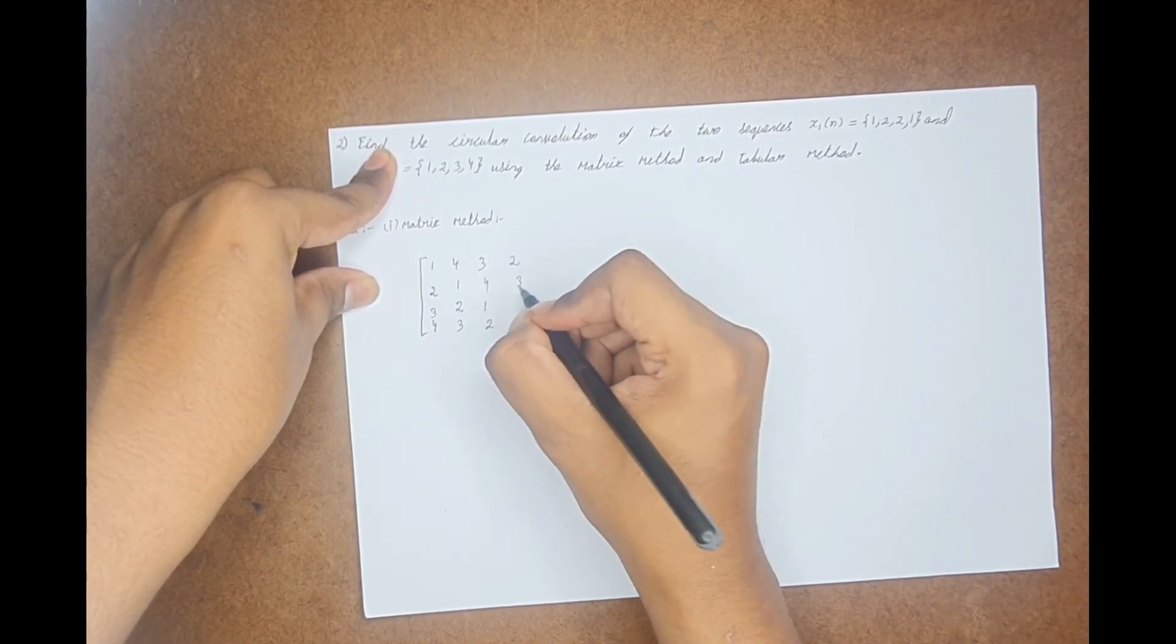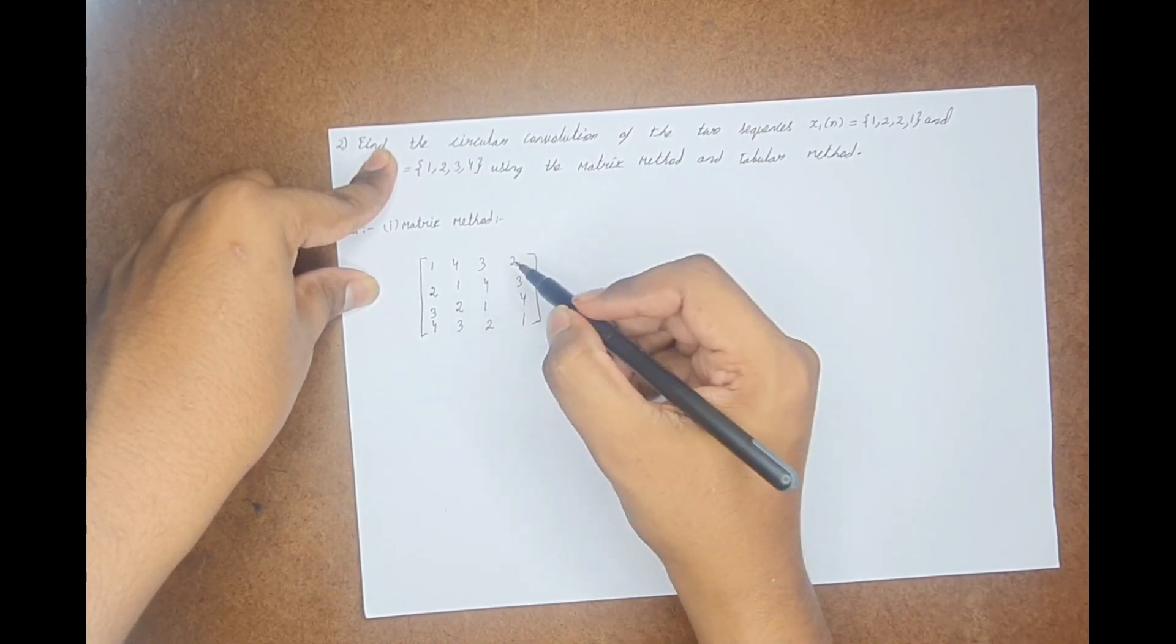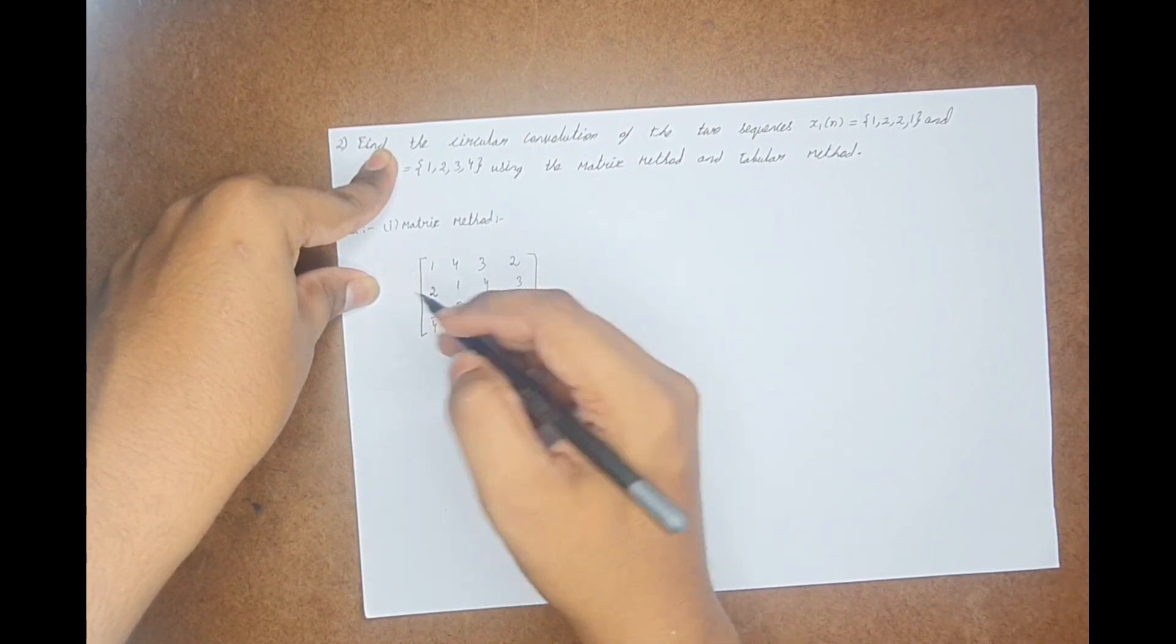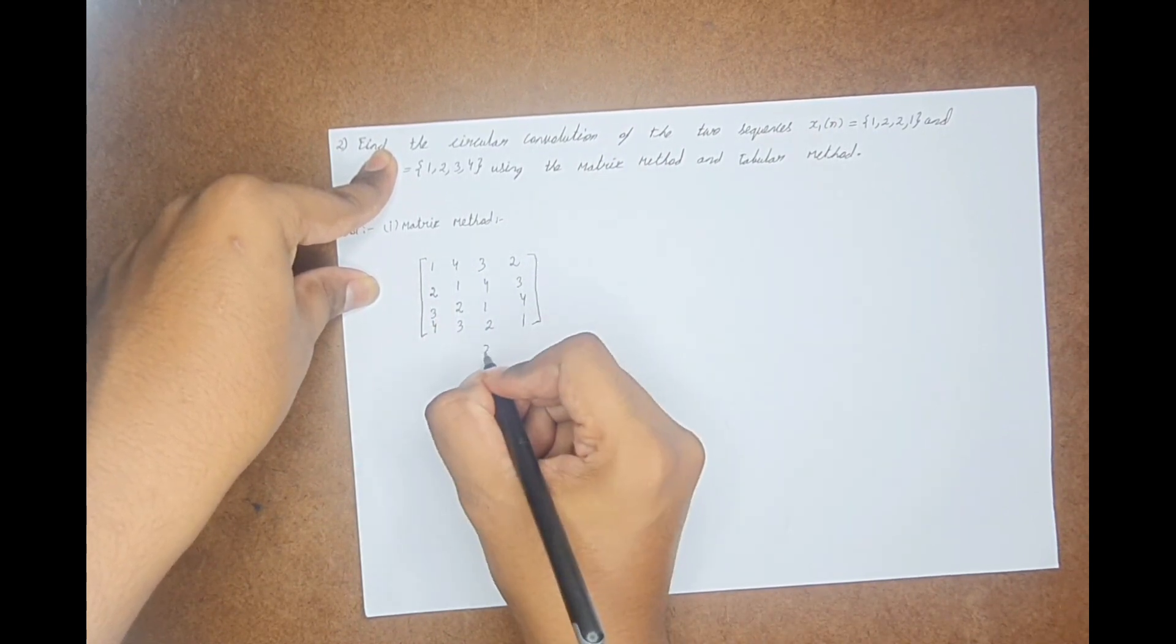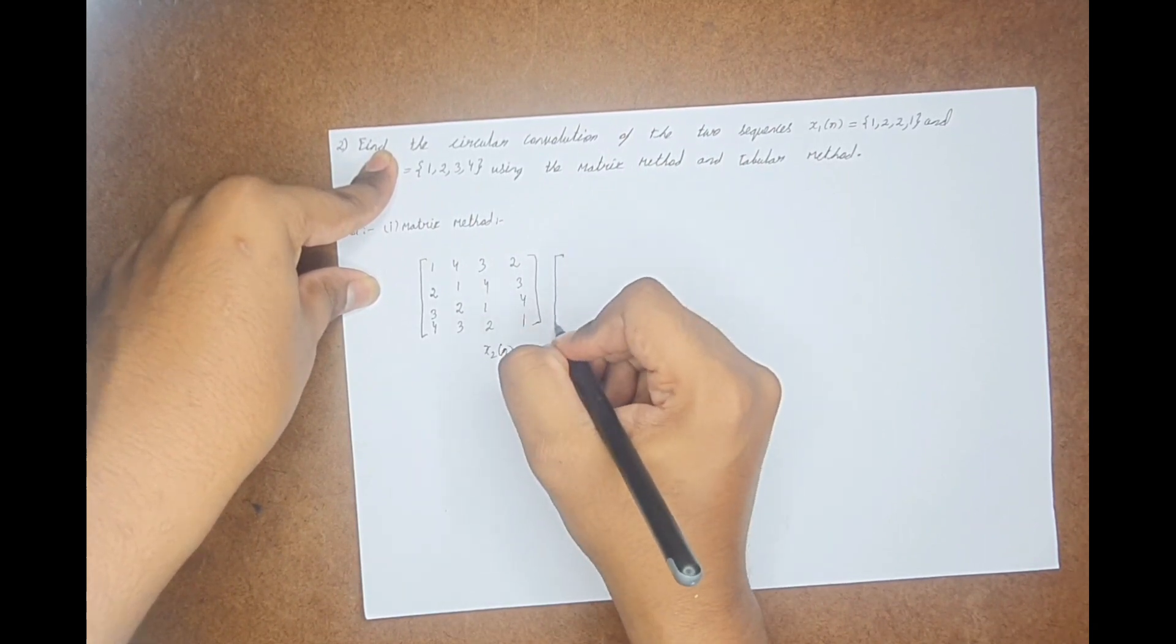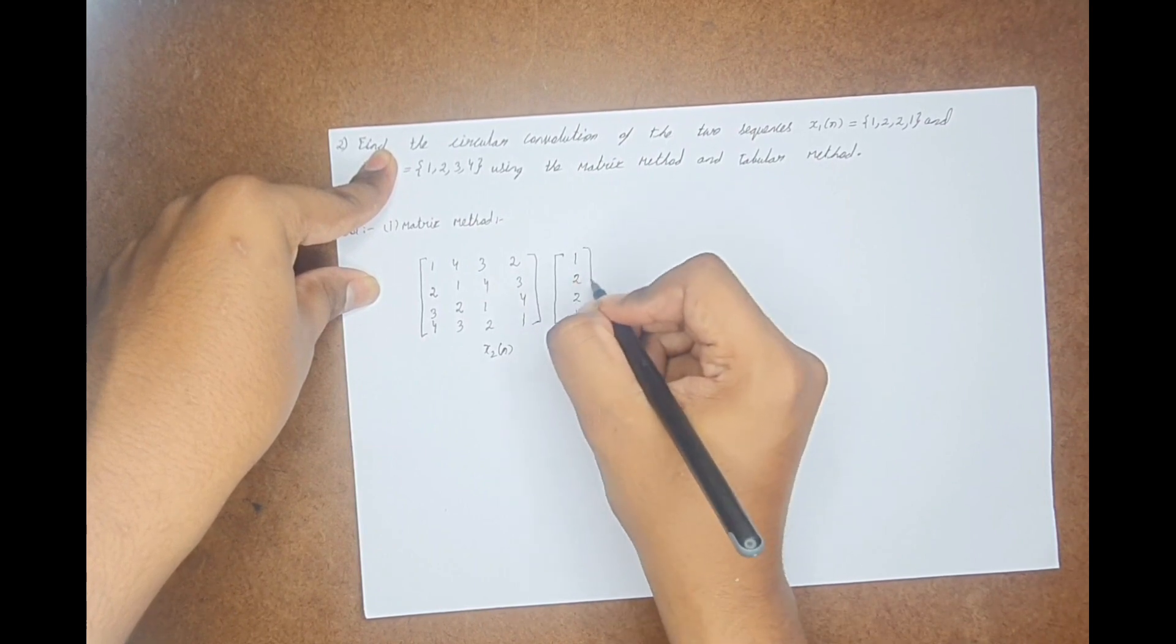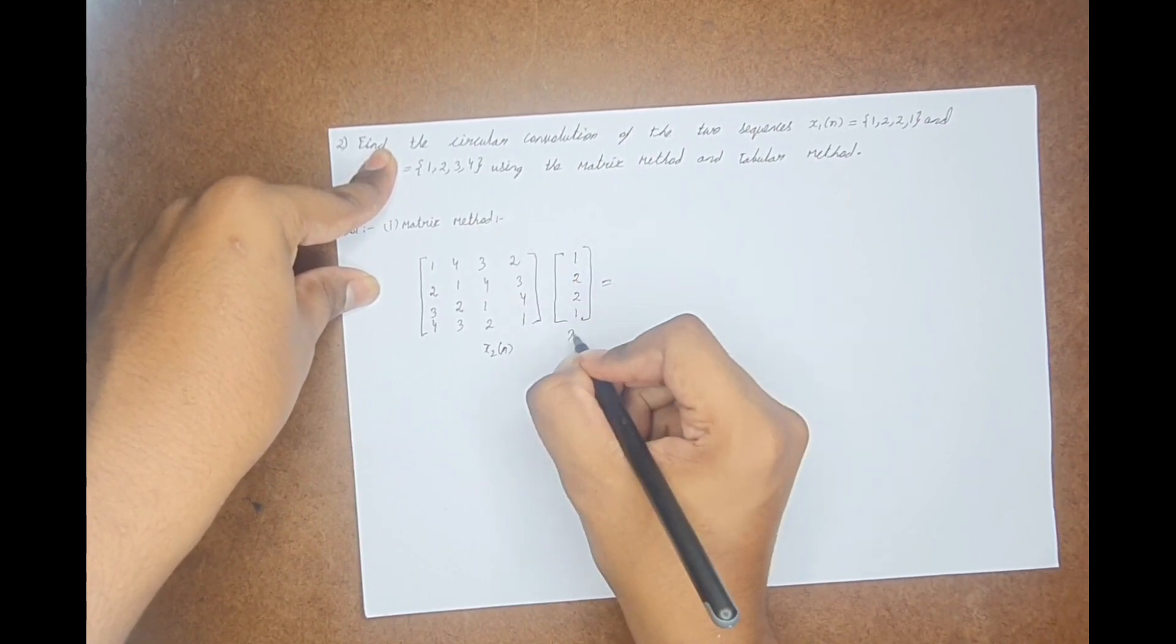Again, you push this value 4, 1. Now, again, once more if you do the transpose, you get again the first column. You should stop there. This is my x2(n) matrix. Now, write the x1(n) matrix which is 1, 2, 2, 1, and this is my x1(n).